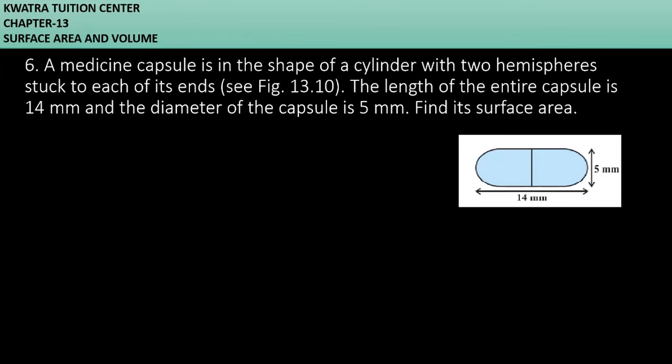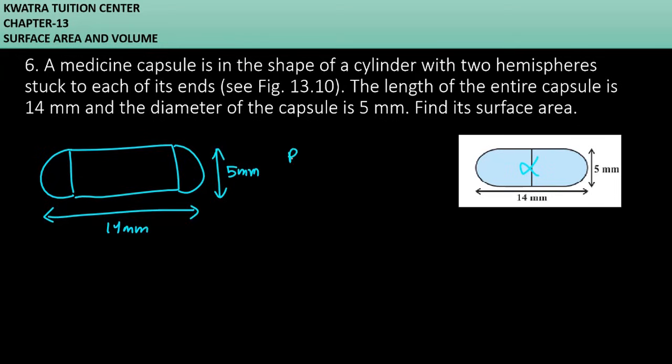We need to find the complete surface area. The length of the capsule is 14 mm and the diameter is 5 mm. We can calculate the radius of the capsule, which is 5 over 2 mm.